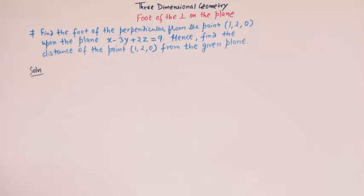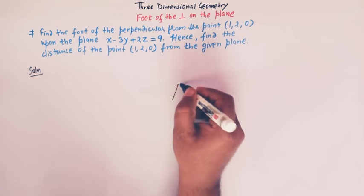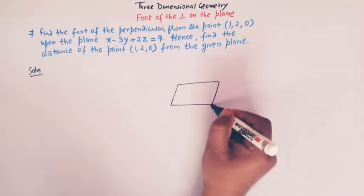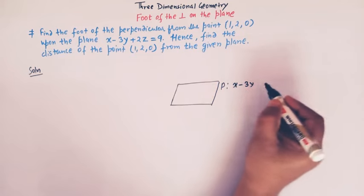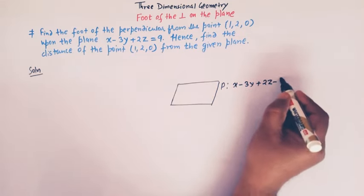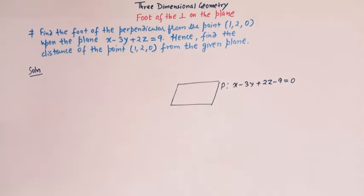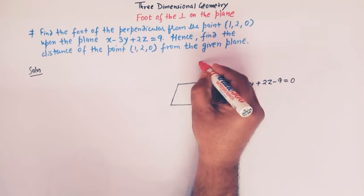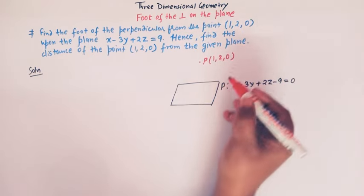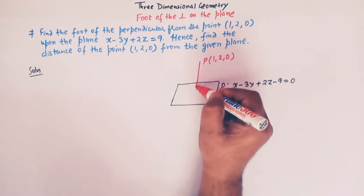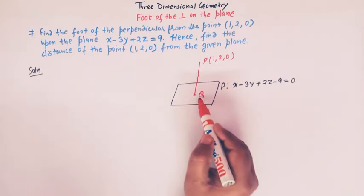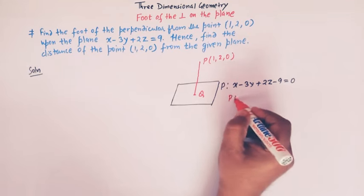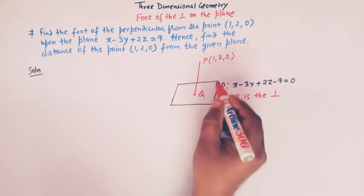And hence we also have to find the distance of this point (1, 2, 0) from the given plane. So here we are given a plane — here we have a rough diagram — and this is the plane P whose equation is given as x minus 3y plus 2z minus 9 is equal to 0. And we are given a point say P which is (1, 2, 0), and we draw a perpendicular on this plane. Let Q denote the foot of this perpendicular, so PQ is the perpendicular drawn on this plane.